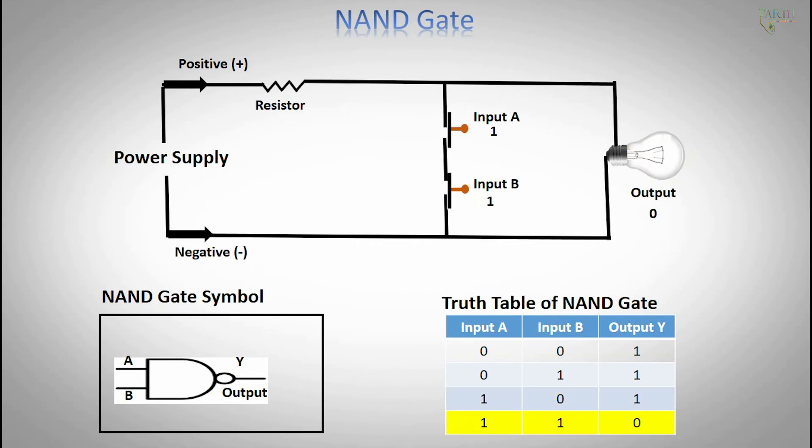Input A is 1, Input B is 1, Output is 0 low.